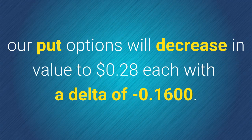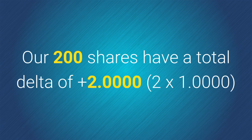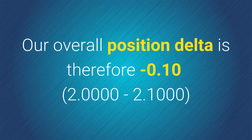We also note from today's list of option prices that, should the share price rise to $112, our put options will decrease in value to around 28 cents each, with a delta of negative 0.16. The delta of the company shares themselves will of course be 1, so our 200 shares have a total delta of 2 — that is, 2 times 1. We need to purchase 5 times $110 put option contracts at a delta of negative 0.42, giving us a total delta of 2.1 — that is, 5 times 0.42. Our overall position delta is therefore negative 0.1, that is 2 minus 2.1.